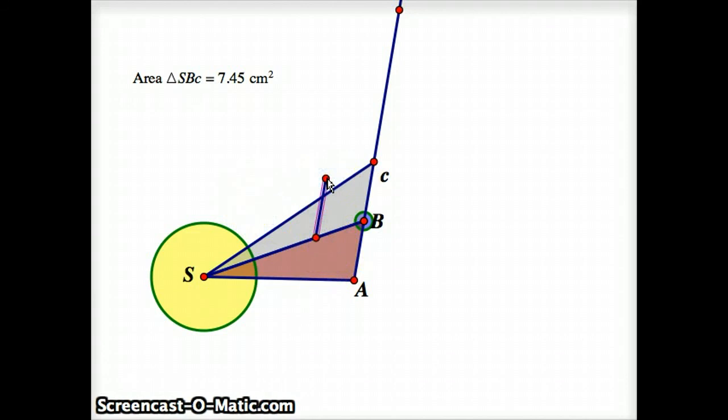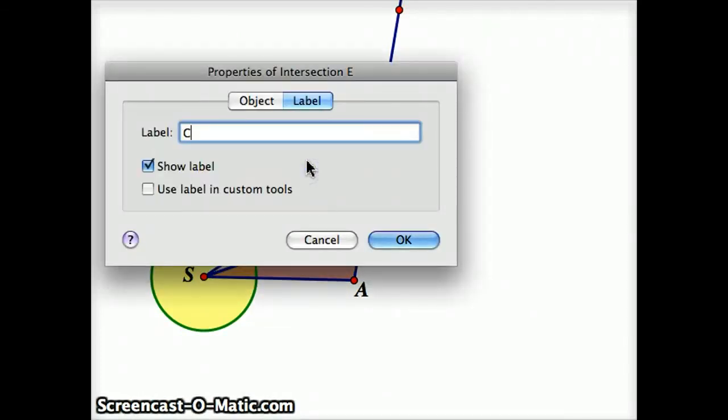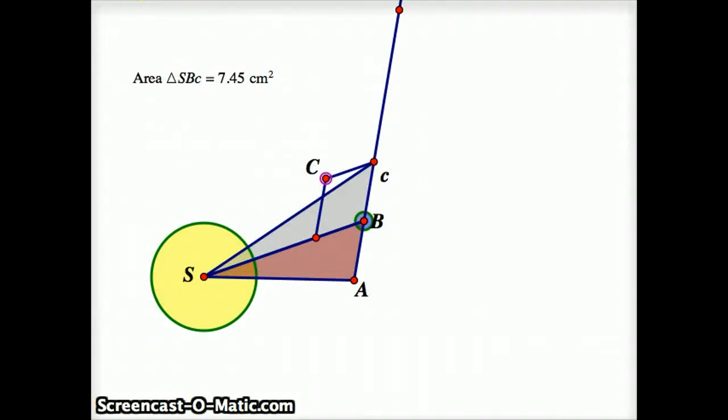And what Newton says is that the course the planet will take is not going to go to lowercase c anymore, but instead it's going to go along the diagonal here. I'm going to call this capital C. And the planet actually ends up going in this direction.